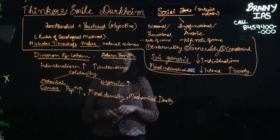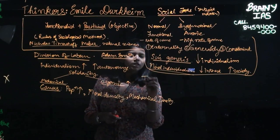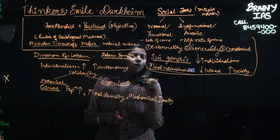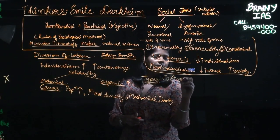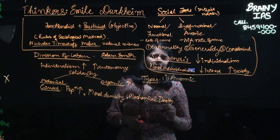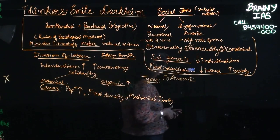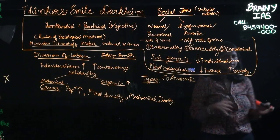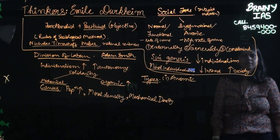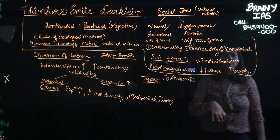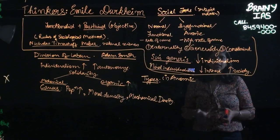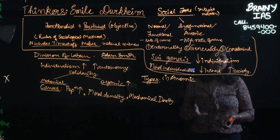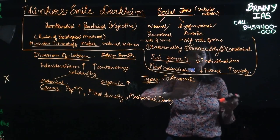Now he further goes on to mention about three types of division of labor. First one is anomic. Now let's say, if we talk about an industry or let's say a factory for that matter. If the management happens to face suspension or the management falls out, the administration falls out, there will be no regulation. In that case, it becomes an anomic division of labor.